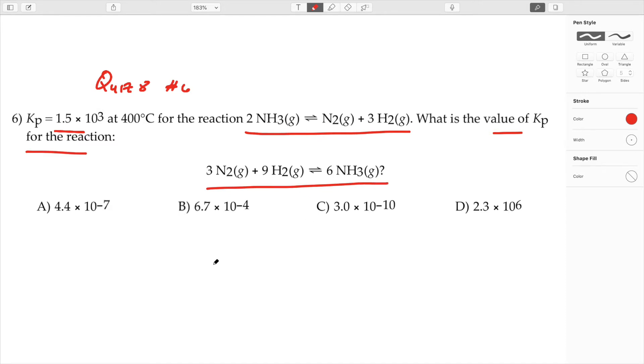First I'm going to label this as reaction 1 and this will be reaction 2. I need to manipulate reaction 1 so that it looks like reaction 2.